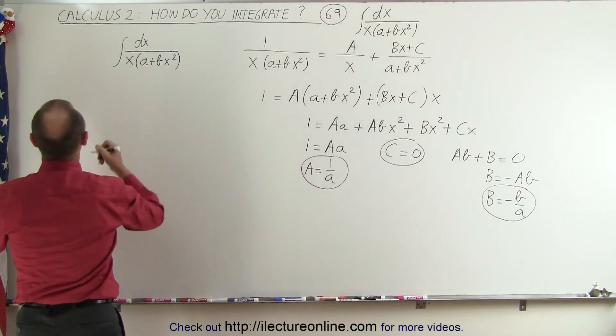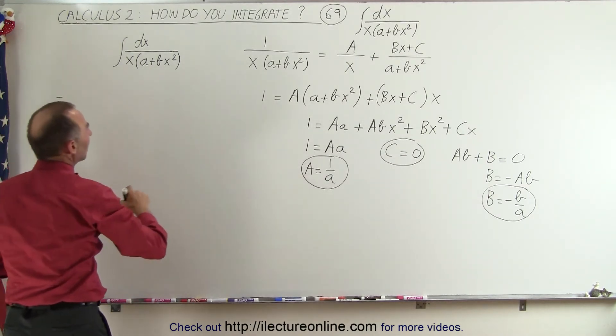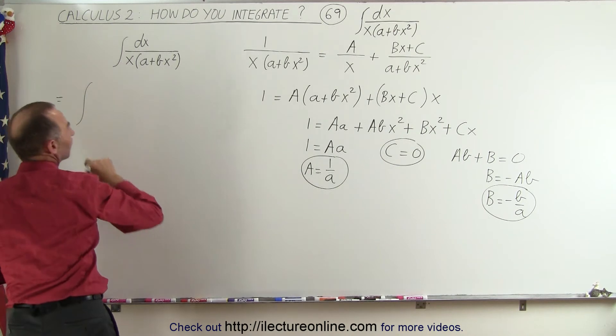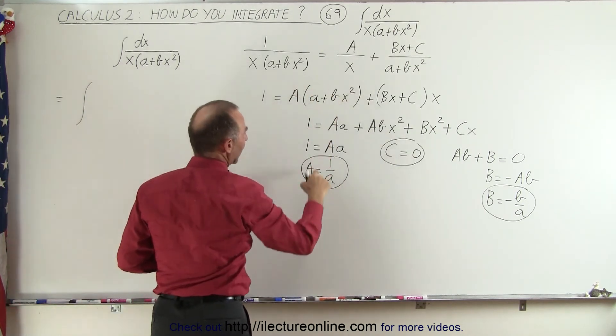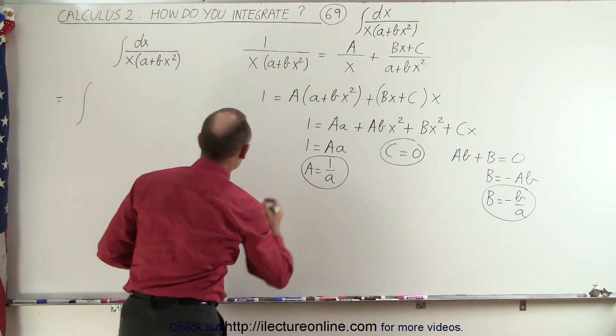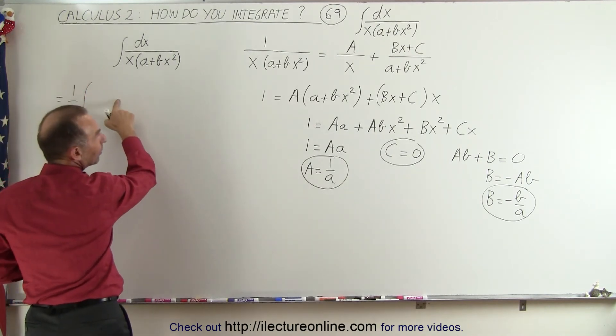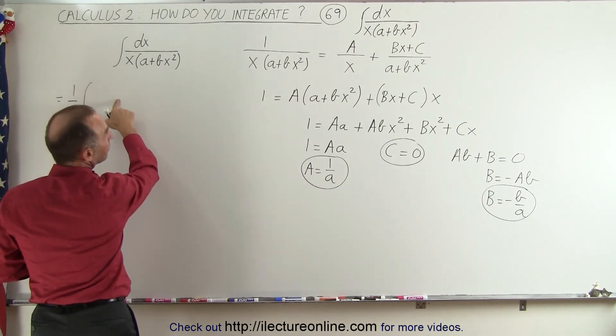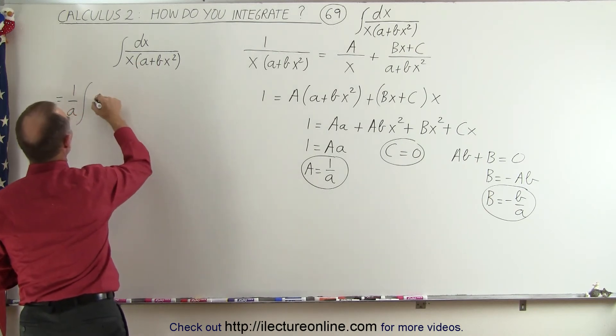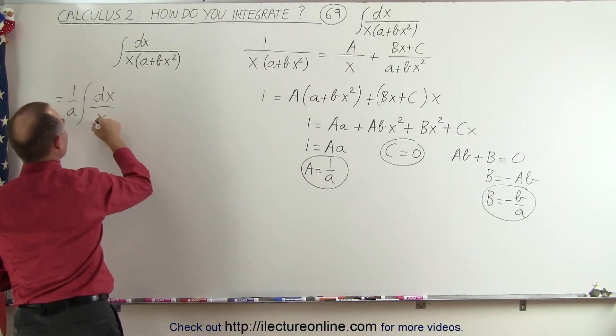So over here, this is going to be equal to the integral of a over x. Now, a is 1 over a, which can be pulled out of the integral sign, so we have 1 over a times dx over x minus,